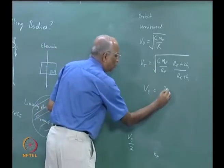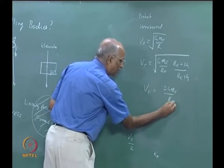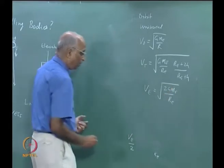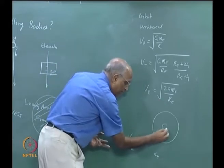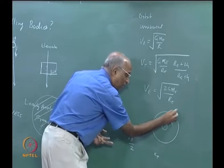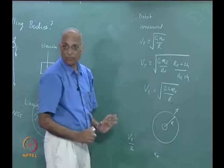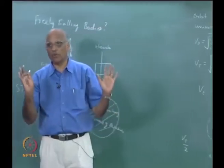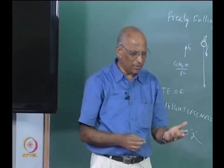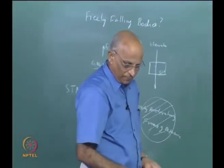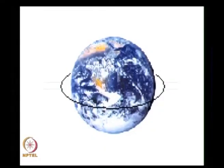We said escape velocity is equal to the square root of 2 G M_e divided by the radius of the earth from the surface. If I want something orbiting at a distance r from the surface and I want to push it to infinity, then r replaces r_e in the formula. This is all what we have done so far. Let us take one or two small problems, but before that let us quickly revise with a PowerPoint presentation.